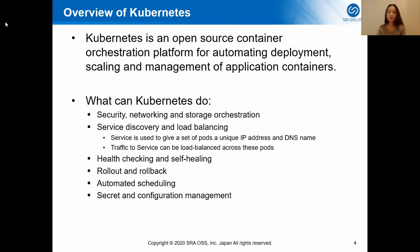Nowadays more and more applications are being deployed in containers. In a production environment, you need to manage and monitor the application containers to ensure there is no downtime. If a container goes down, you need to restart another one. Just think about if you have a large number of containers — managing such a large number of containers is very complex and needs many manual operations. Kubernetes automates such manual processes. It provides an automated way to deploy, schedule, and scale your application containers.